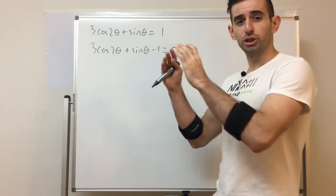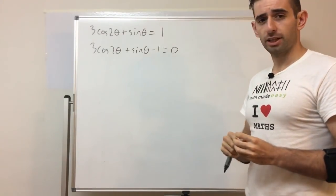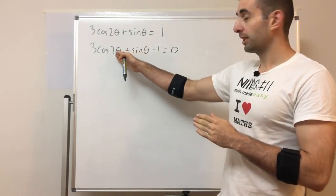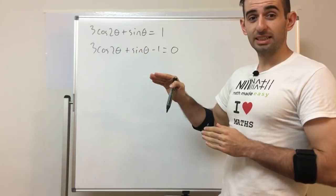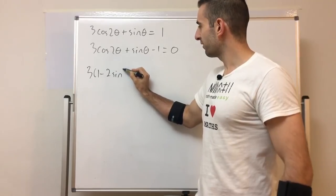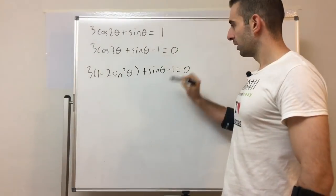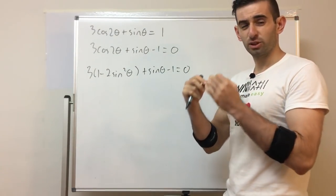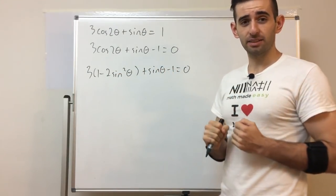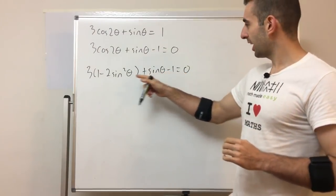Remember, cos has three double angle identities, which makes this a little tricky. The aim is to reduce it down to a quadratic so I can factorize it. Which identity makes life easier? We're going to use the one involving just sinθ — that is, cos(2θ) = 1 − 2sin²θ. That way we only have sinθ terms left, making it easier to factorize.